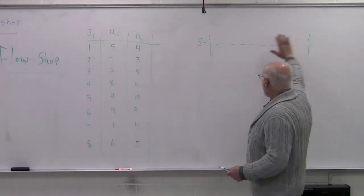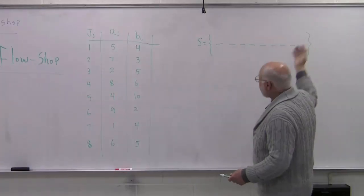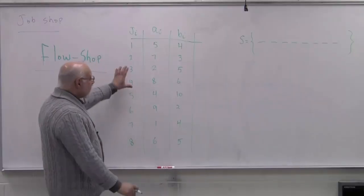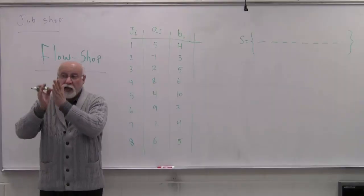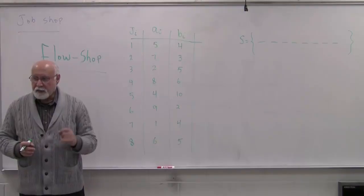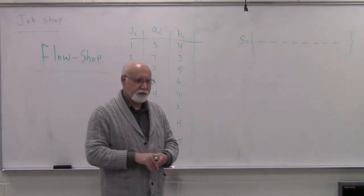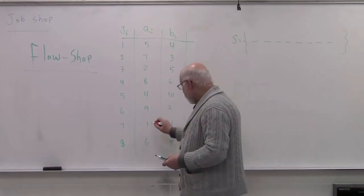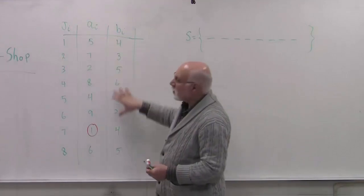One of these jobs is going to be scheduled here, here, here, and so on. The next step is to look at all these processing times — both A-I and B-I — on both machines, and find the minimum number, the minimum processing time. In this case, the minimum processing time is 1, and there is no other minimum.